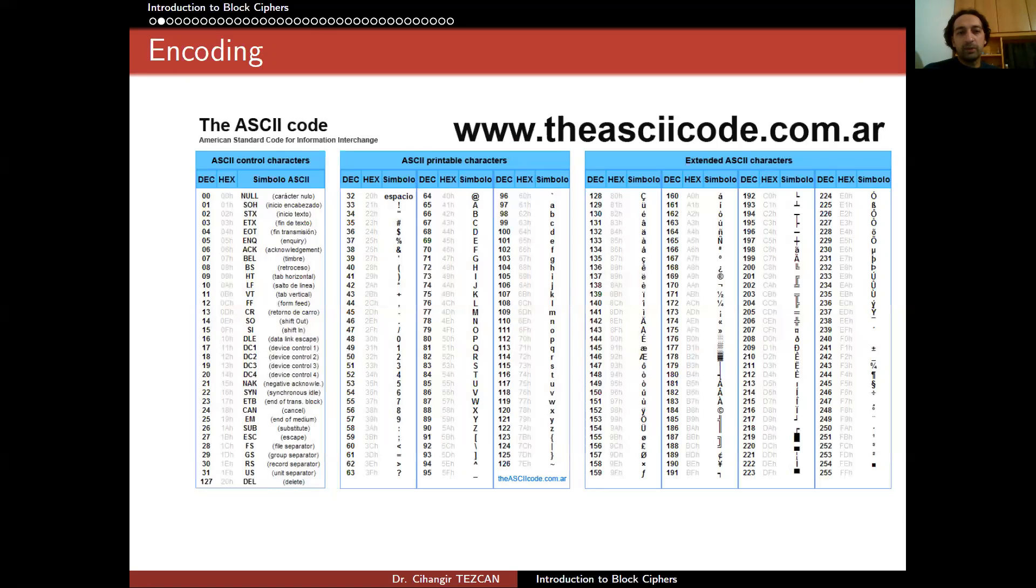So here's an example of the ASCII table. Since every character is represented by a byte, which is just eight bits, so at most you can represent 2 to the 8 characters, which is 256. For this reason, this table starts from zero and goes until 255. Actually, the second part is the extended table. But the first part is actually the original part, let's say.